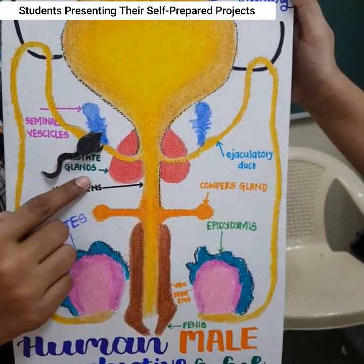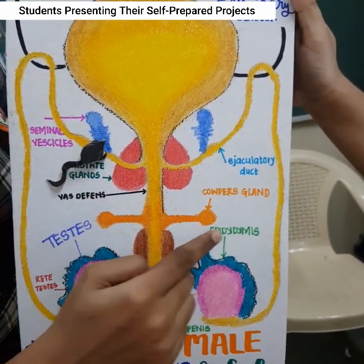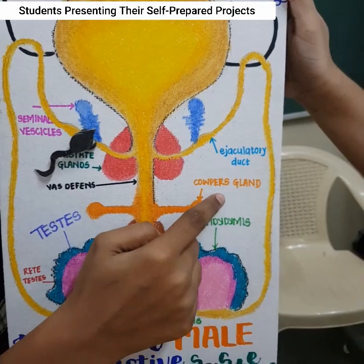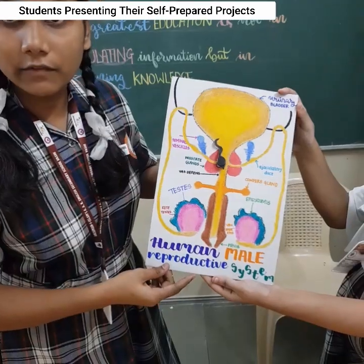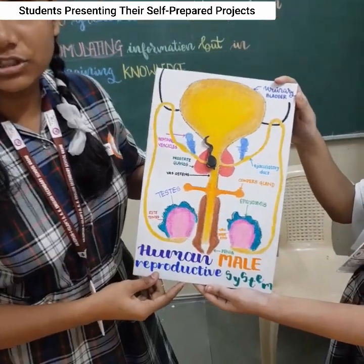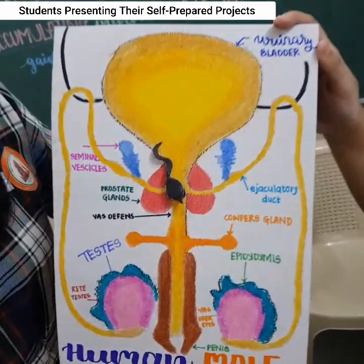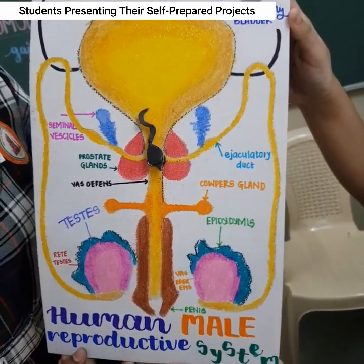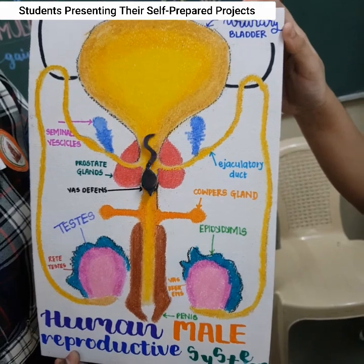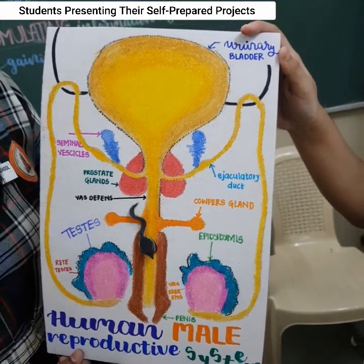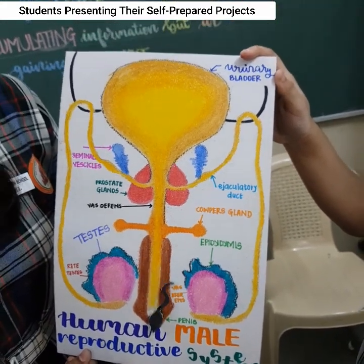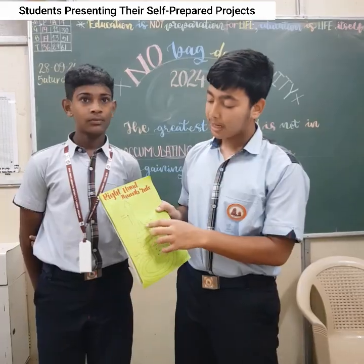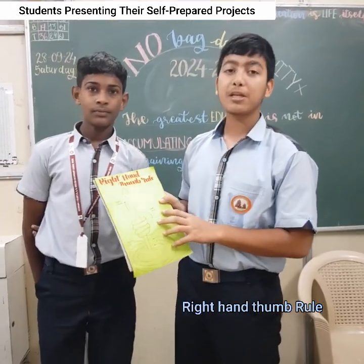The prostate glands and the bulbourethral glands secrete into this pathway and it will reach the urinogenital duct. Once it reaches the urinogenital duct, it will exit the body through the penis.